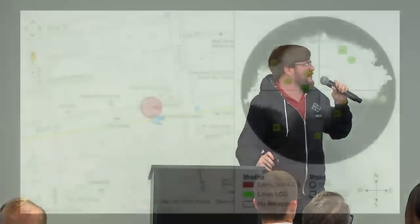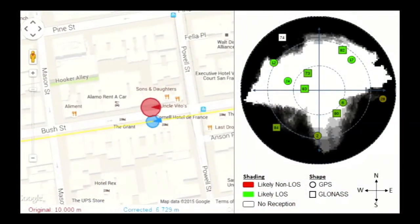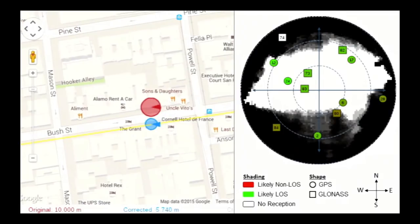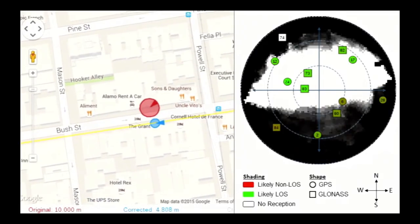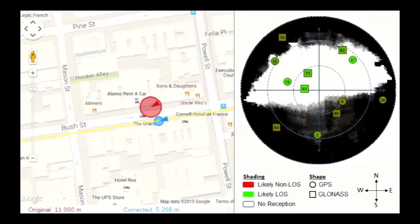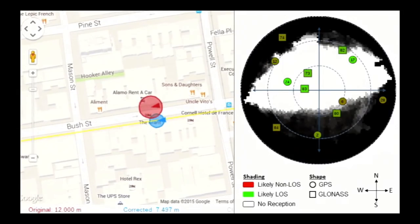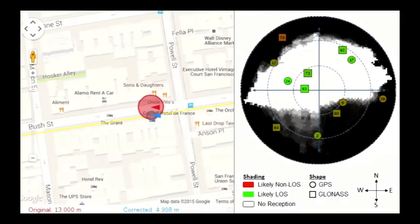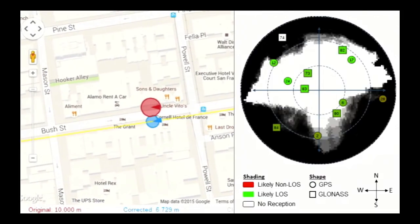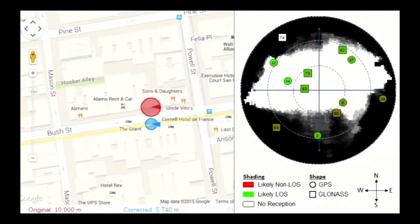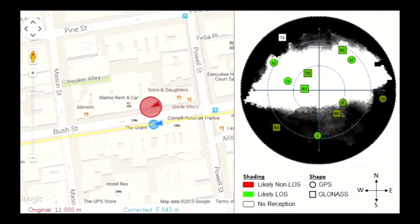So here's another visualization of I'm walking west on Bush Street on the south side of the street. And here I'm color-coding the satellites by signal strength. So the green satellites are high signal strength, the red and orange ones are low signal strength. And you can see that the high signal strength satellites are all in the open sky, and the low signal strength satellites, like number 74 there, that's not even seen. It's behind the building.